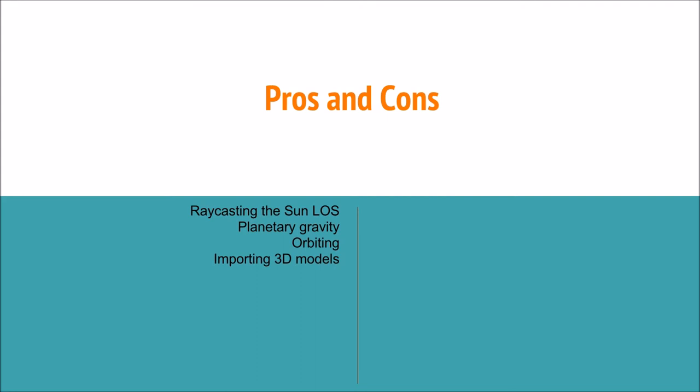To round things up, here are the pros and cons of this game. This was my first Ludum Dare and the things I think went pretty well: raycasting and the sun line of sight was the main mechanic of the game, so it was important to get that in place early. I also kind of like the planetary gravity, though it would need some tweaking because gravity works so well close to a body but really not that great further away from a body. It's kind of difficult to balance. Then we had the orbiting mechanics which I find pretty useful as well. And the 3D models did work to import and all that without much hassle.